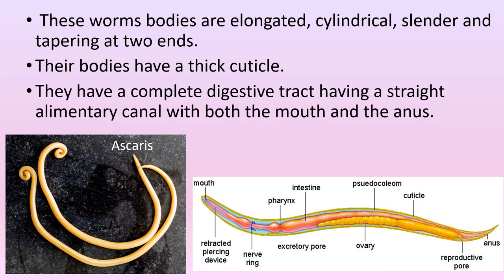These worms' bodies are elongated, cylindrical, slender, and tapering at two ends as you can see here. Their body has a thick cuticle. The cuticle is the outer layer or part of an organism that comes in contact with the environment.